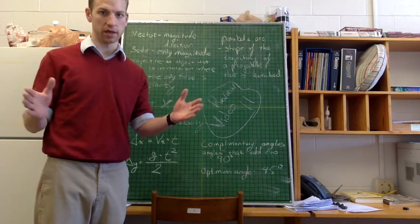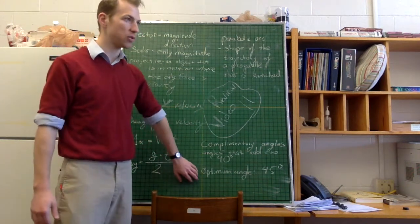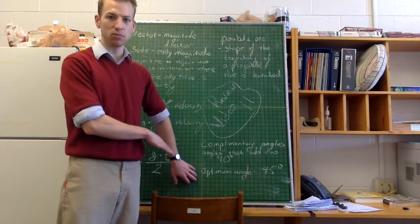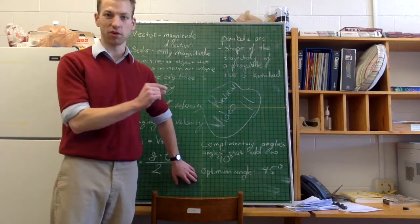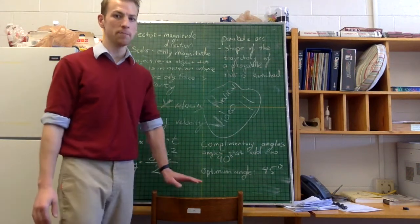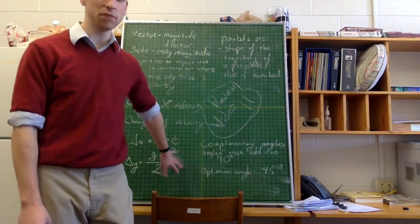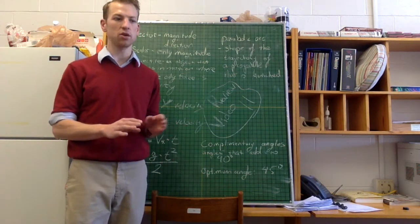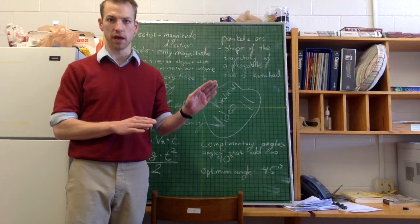And that is true for every complementary set of angles. So 60 and 30, same range. But something that is more important about the degree that is 45, or a projectile launch at a 45 degree angle, is that that's the optimum angle if you want to get your most range. So the most range you can get, you want to launch something at a 45 degree angle.